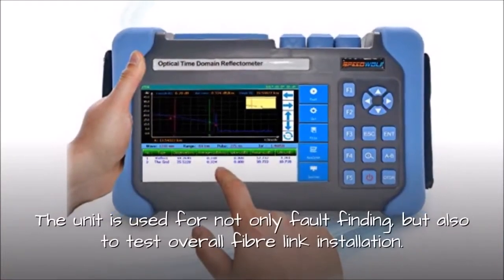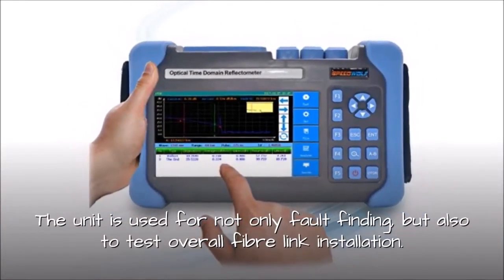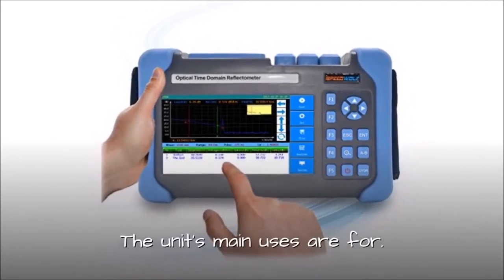What is the OTDR used for? The unit is used for not only fault finding but also to test overall fiber link installation. The unit's main uses are four.